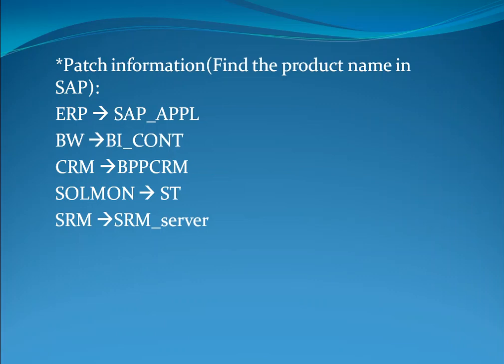In System Status, what patch information is present? For ERP, the information is SAP_APPL. For BW, it is BICONT. For CRM, it is BPPCRM. For Solman, it is ST. For SRM, it is SRM_SERVER.